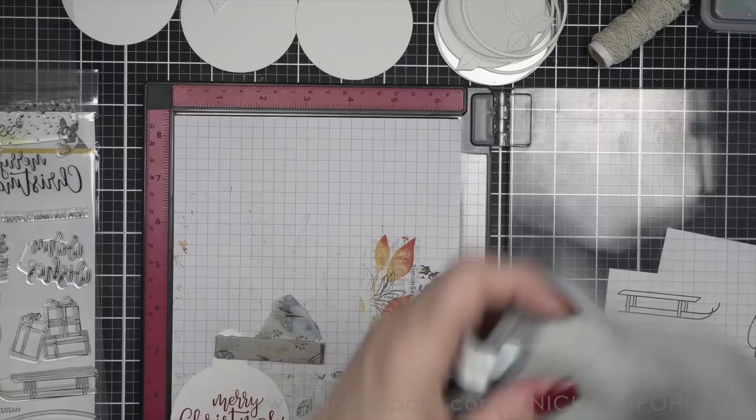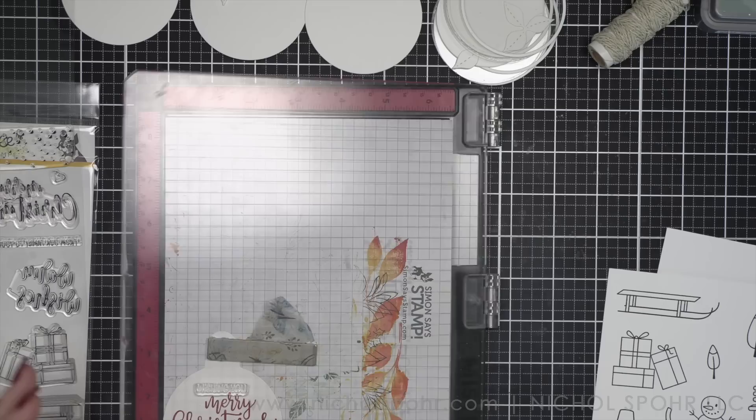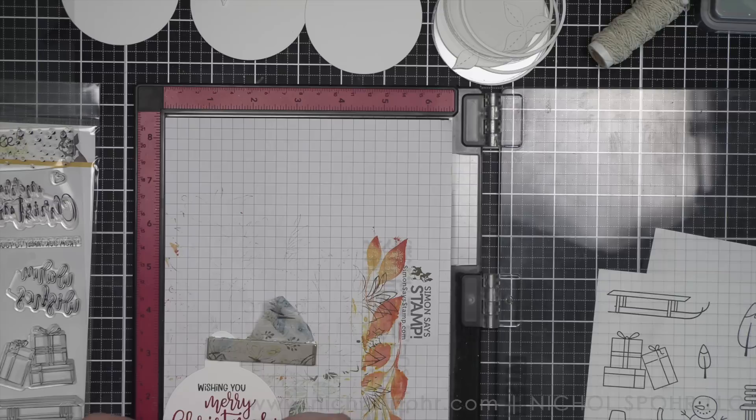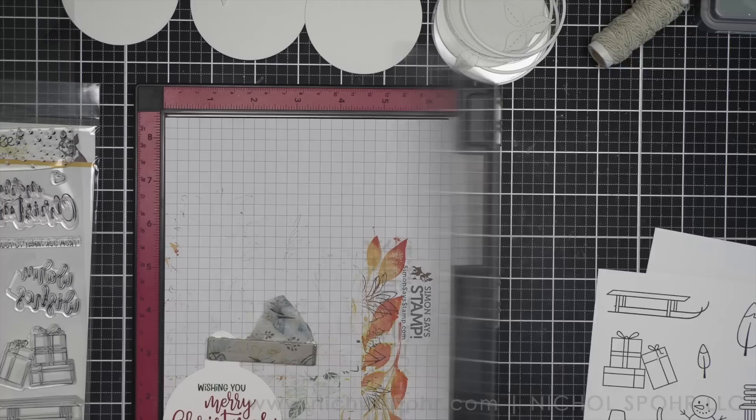Then for the backer, you could stamp this just on the back of the background piece but I really find that an extra step of die cutting one extra background just sandwiches it much nicer. I think it looks a lot more clean and finished that way.